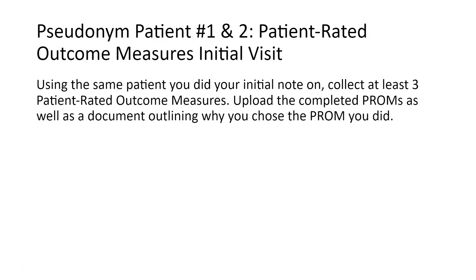For the patient rated outcome measures, you need to select at least three of these. If you need help identifying those, Google is your best bet, and I can help you with that as well. You're simply going to ask them to complete it and then document why you chose the measures you did. So those are four separate assignments: the initial note for both patient one and patient two, and then the PROM for one and two.